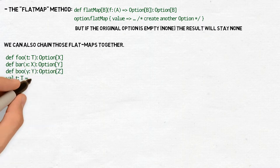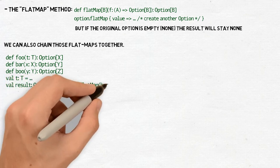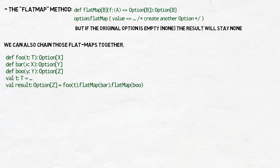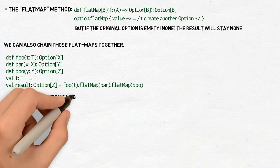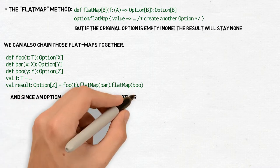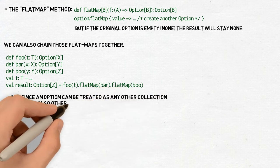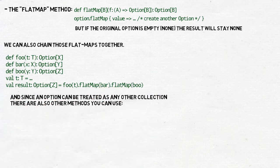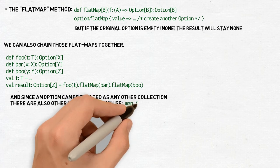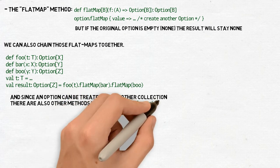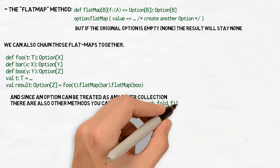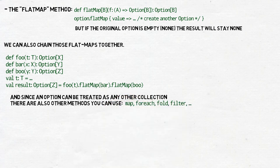In the end we will get some final result only if all consecutive function calls produce intermediate results. If even one of them will end up with none, the final result will be none as well. And since an option can be treated as any other collection, after all it's just a list with at most one element, there's also a wide range of methods which work like their counterparts for more regular collections, map for each fold, filter and so on.